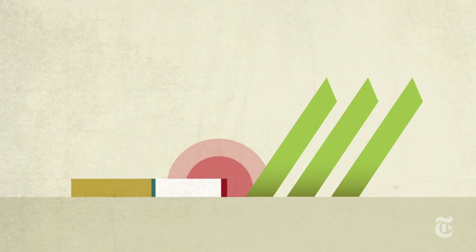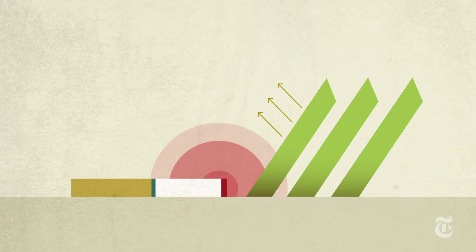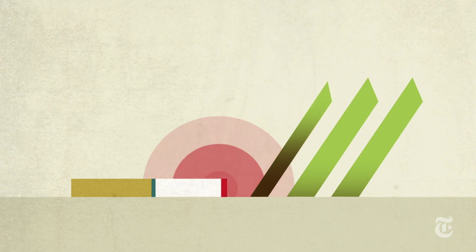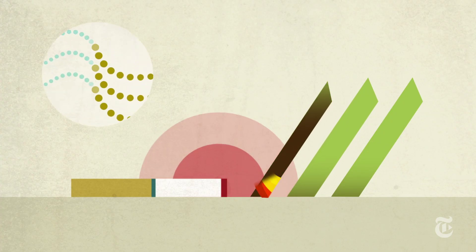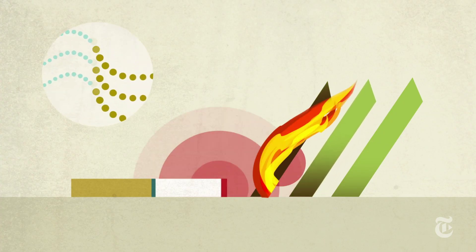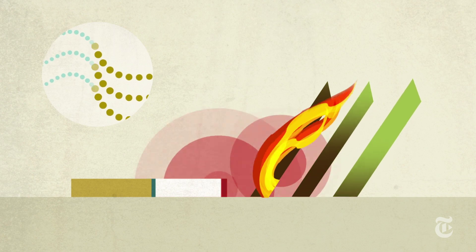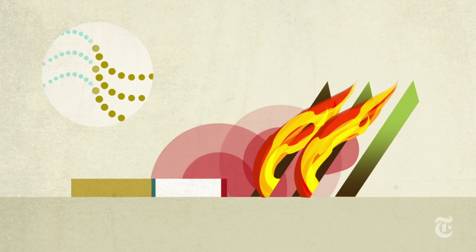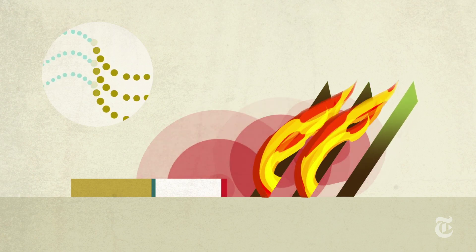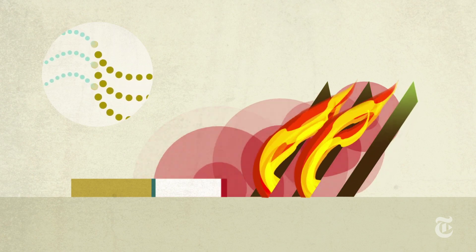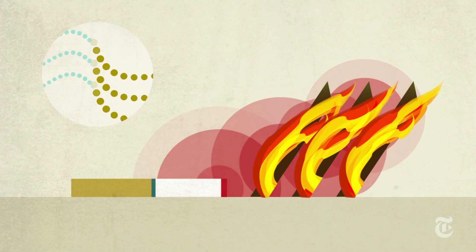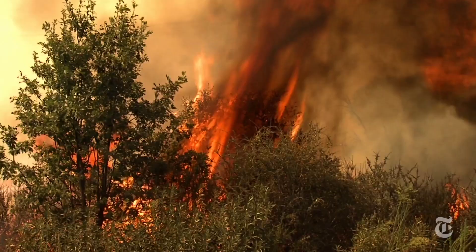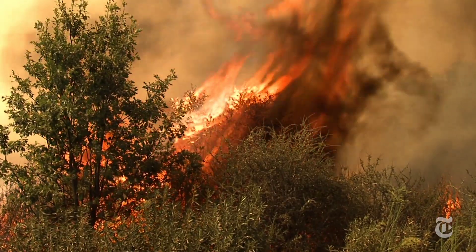The heat can make bone-dry leaves or grass release volatile gases that combine with oxygen in the air to burn. That generates more heat, which releases more gases, starting a chain reaction involving larger and larger vegetation. Soon, whole trees are burning.